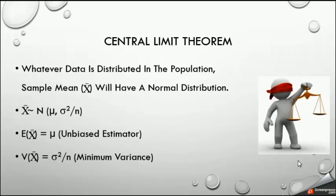To introduce our sampling, we have what is called the Central Limit Theorem. Our population could be distributed in different ways — normally, uniformly, or exponentially — and we may not have exact information about the distribution. But the Central Limit Theorem says that whatever the distribution of our population, the sample mean x-bar itself has a normal distribution. This distribution has a mean value of mu (μ), the population mean, and a variance of sigma squared over n (σ²/n). So the variance of x-bar depends on the sample size n.